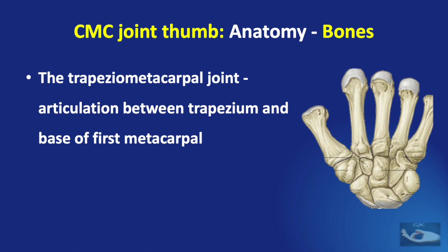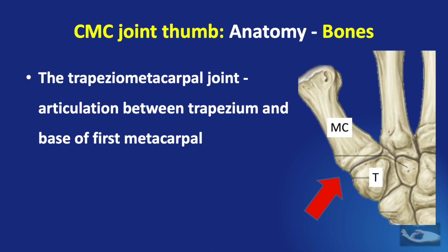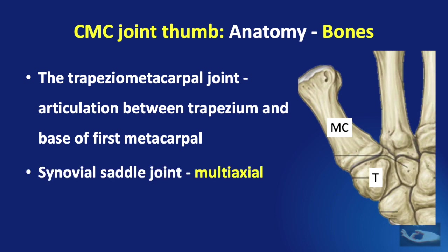The carpometacarpal joint of the thumb, or the trapezio-metacarpal joint, is an articulation between the trapezium and the base of the first metacarpal. The trapezium is so important for the movements of the thumb that it articulates with three other bones: the scaphoid, the trapezoid, and the second metacarpal. This joint is a synovial saddle joint and it is multi-axial.